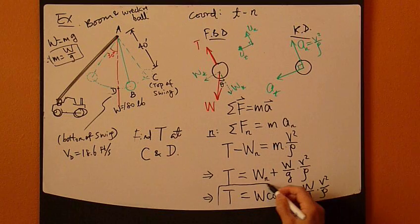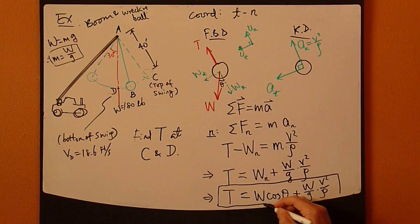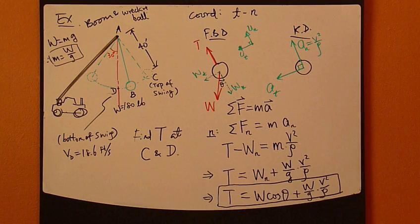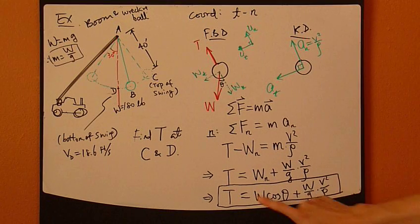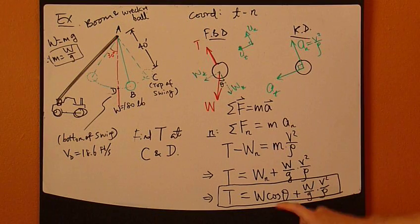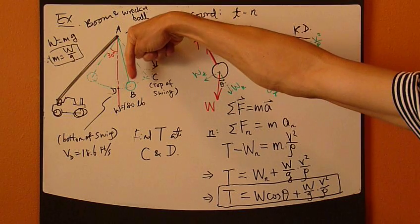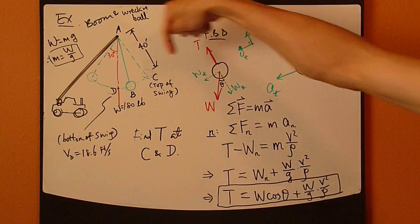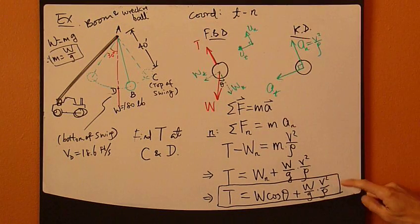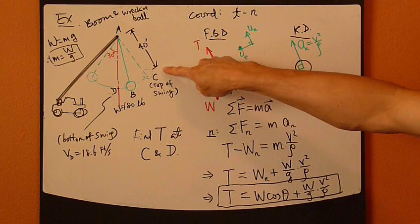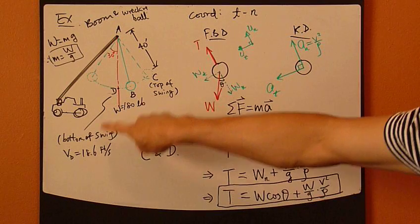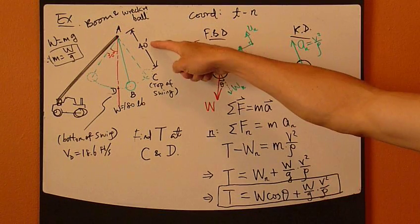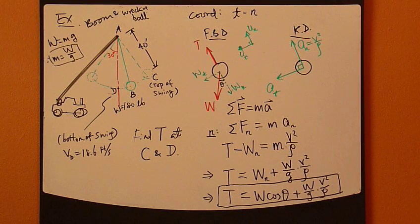So, now, this is the equation that you can use to solve for this tension at both positions. So, look at this. Weight is constant. Theta goes from 0 here to 30, right? And G is constant. V is different at each position, but at position C, velocity is 0. The bottom of the swing D, velocity is given. So, this is taken care of. Rho is just 40. So, we're all set. Next step is plug and chug. That's all.